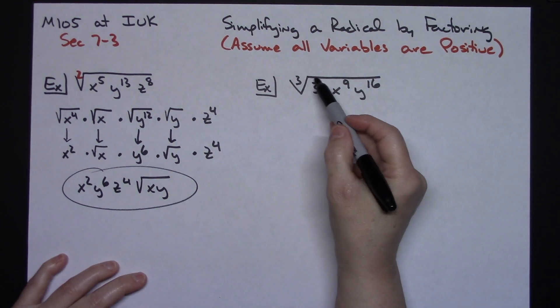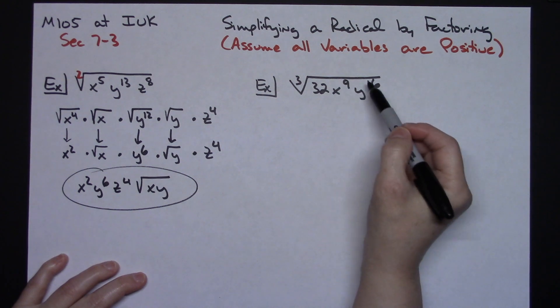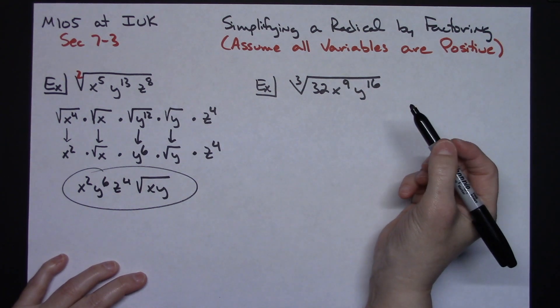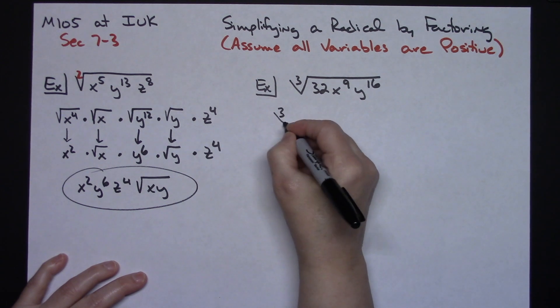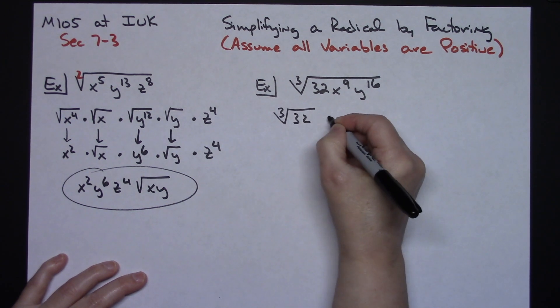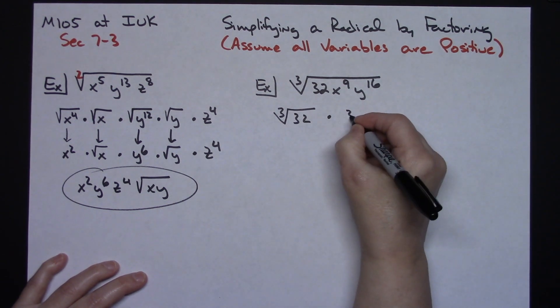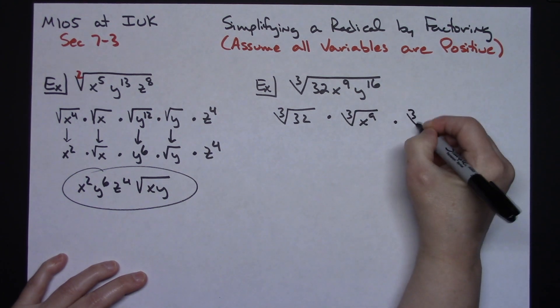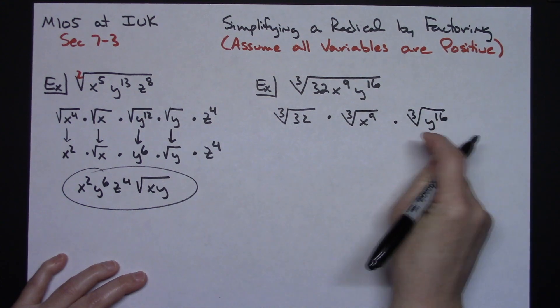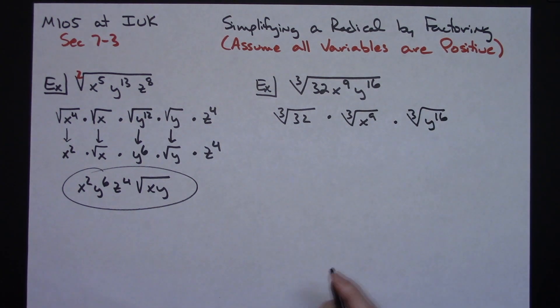Now on this one, I do the number by itself, then I do each of the letters individually. So I think I'm going to add an extra line here. Let's do the cube root of the 32. I'm going to separate that away from the variables. Cube root of x to the 9th, and then cube root of the y to the 16th. I'm going to look at these three things separately.